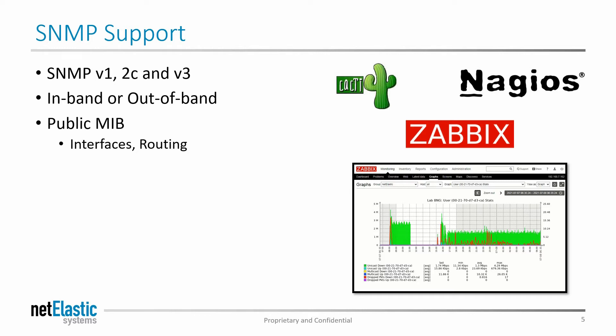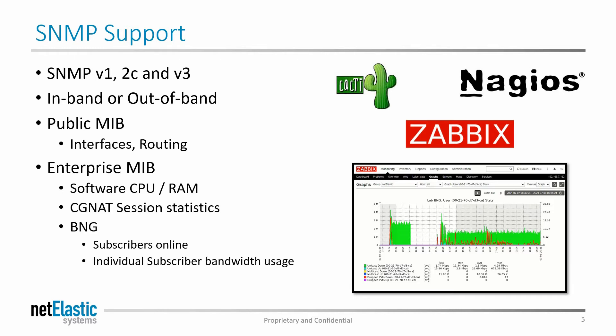We support all of the public MIBs that you'd expect on a router, including all of the interface and routing OIDs. And then we provide our own enterprise MIB. This will give you more details about the specific Netelastic router and BNG functionality — everything from the CPU and memory usage, CGNAT session statistics, and all of the BNG operational details that you need to look at.